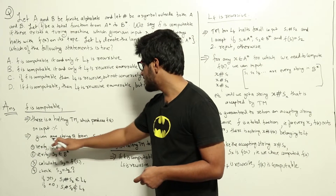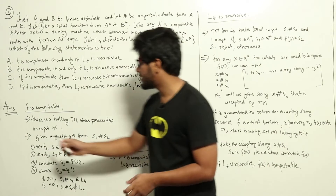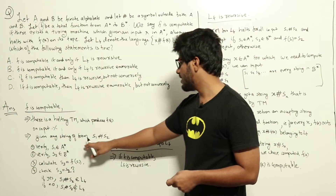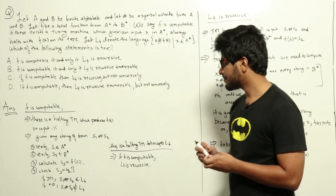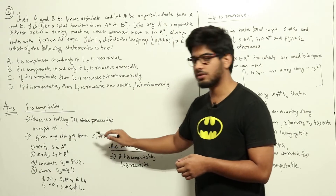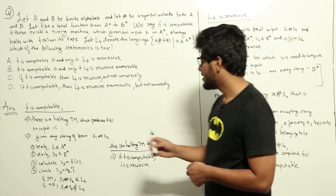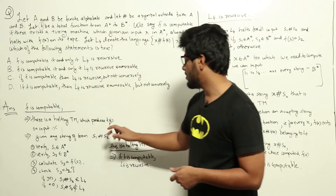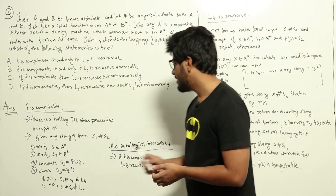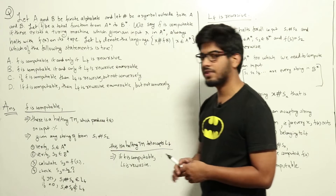Given any string of the form s1 hash s2, here is an algorithm. First, verify that s1 belongs to a-star — a halting Turing machine can do that easily. Second, verify that s2 belongs to b-star — that is also straightforward. Then, calculate the string s3 which is equal to f(s1).